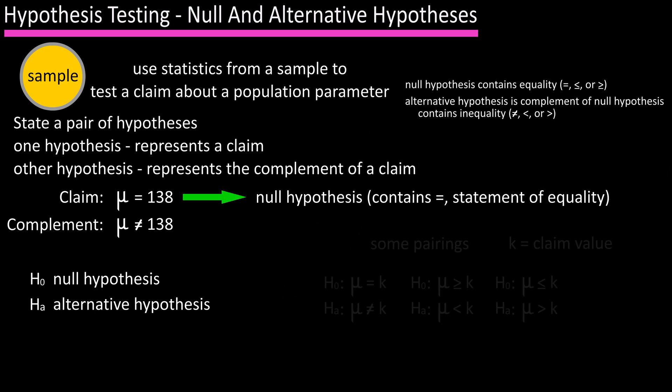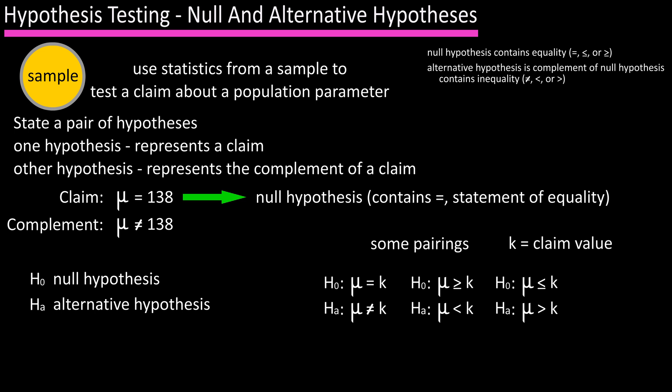Some potential pairings of hypotheses are listed here and k represents a claim value. In number one we have for H sub zero, mu equals k, and for H sub a, mu not equal to k, which is what our example is. In number two we have for H sub zero, mu greater than or equal to k, and for H sub a, mu less than k.